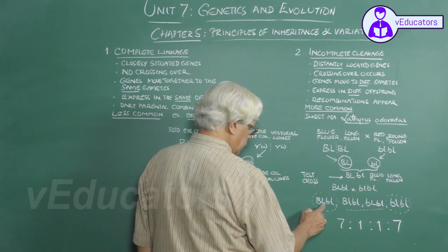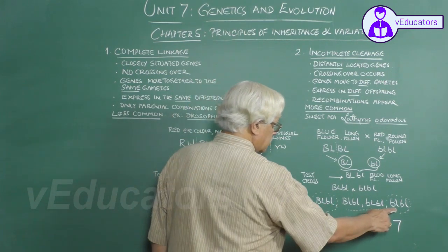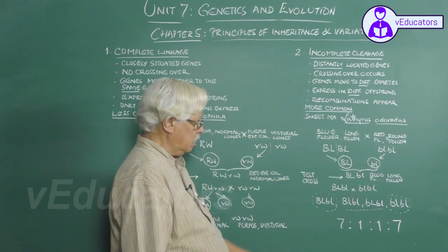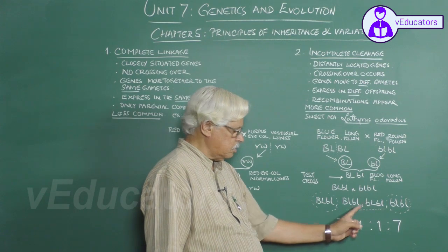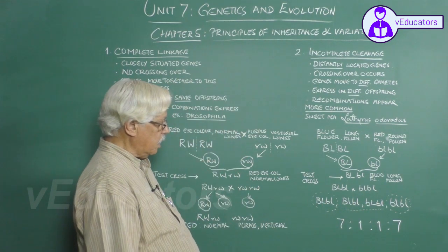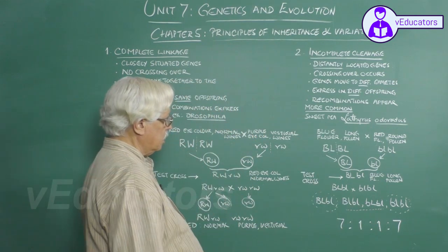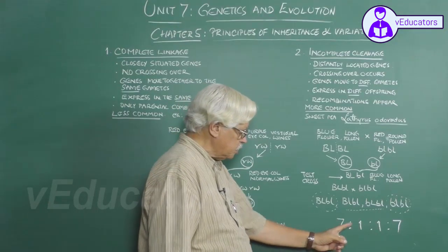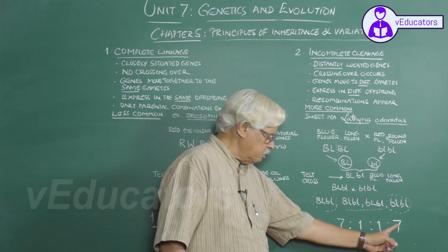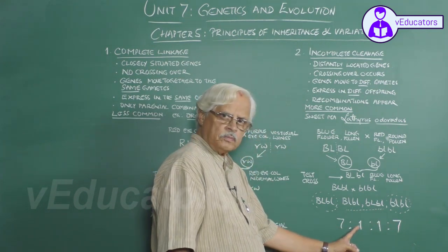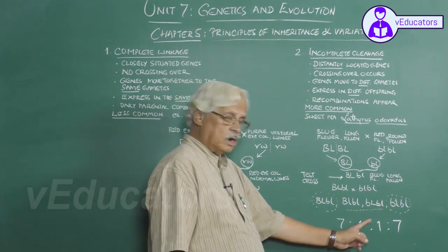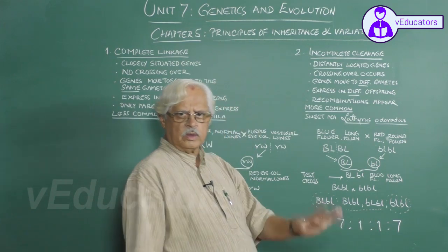Without crossing over, only parental combinations appear: capital B capital L / small b small l and small b small l / small b small l. With crossing over, new combinations also appear: capital B small l / small b small l and small b capital L / small b small l. These are parental combinations and these are new recombinant combinations. The ratio observed is 7:1:1:7 — predominantly parental combinations with some recombinants.